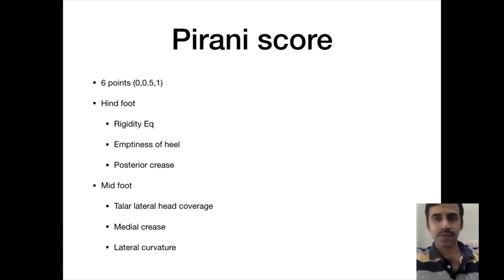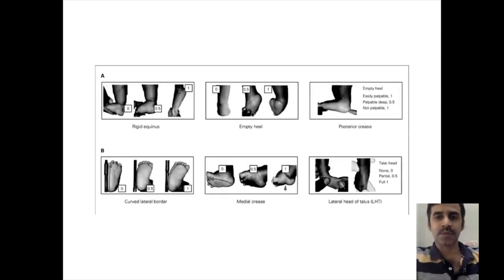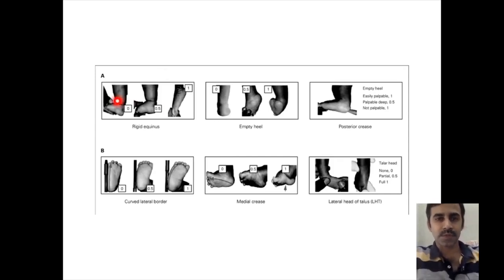We can quantify this deformity using a scoring system called Pirani's score. It has six points. The hindfoot and midfoot are assessed. For the hindfoot we look for rigid equinus, emptiness of the heel, and posterior crease. For the midfoot we look for talar lateral head coverage, medial crease, and lateral border curvature. Here we can see an examiner quantifying the club foot using the Pirani's score.